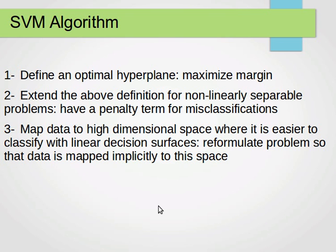Alternatively, if the data is not linearly separable, what SVM can do is map the data into a higher dimensional space where it's easier to classify with linear decision surfaces. The idea is to reformulate the problem so the data is mapped implicitly to this space.